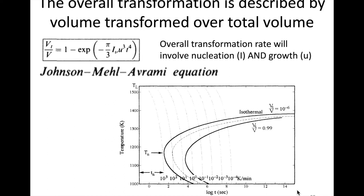We need to look not only at the nucleation rate but the overall transformation rate, which encompasses both nucleation, which we term I here, and growth, which we determine U here. The transformation rate, which is the volume transformed over total volume, equals one minus the exponential with those two terms in it.